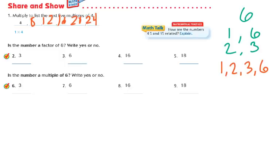Which of these are factors of 6? Well, 3 is a factor — yes. 6 is a factor — yes, that's the number. The number is always going to be a factor and the number is always going to be a multiple. 16 — no, it's larger than 6 and factors can't be larger than the number. 18 — no, because it's larger again.